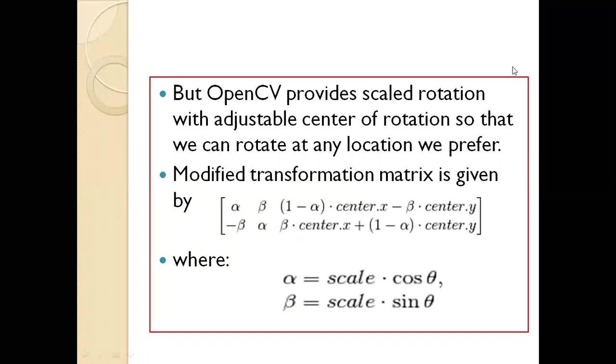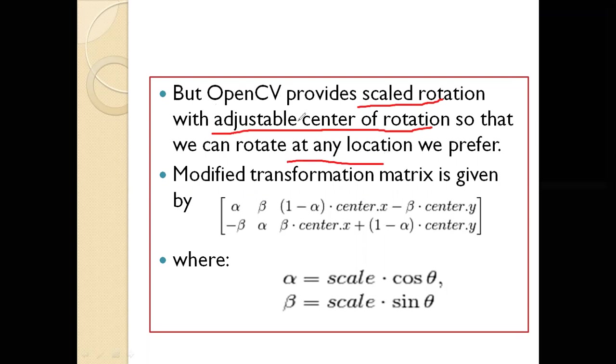But OpenCV provides scaled rotation with adjustable center of rotation so that we can rotate at any location we prefer. The modified transformation matrix is: alpha, beta, (1-alpha)·center.x - beta·center.y in the first row, and -beta, alpha, beta·center.x + (1-alpha)·center.y in the second row.